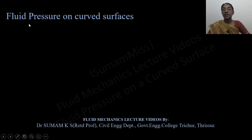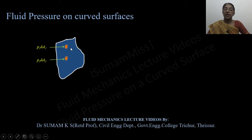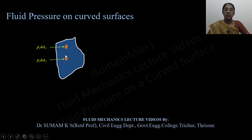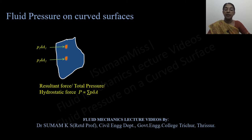In a body of liquid, pressure varies from point to point and increases as we move downward. When fluid pressure acts on a surface, the pressure forces acting on small elements can be represented by a single resultant force. If the surface is plane, the pressure forces acting on the small elements will be parallel and normal to the surface, so the resultant hydrostatic force can be represented by P = Σ(p · ΔA).